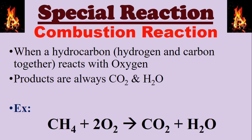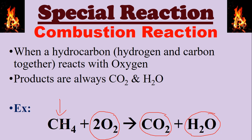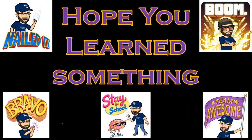One of the special reactions is called a combustion reaction. The definition is when a hydrocarbon — hydrogen and carbon together — reacts with oxygen. The products are always CO2 and H2O. The best way to identify it: on the left side you must have O2; on the right side you must have CO2 and H2O; and the other reactant must contain carbon and hydrogen together, like CH3. As long as it's CH together, you have a hydrocarbon and it's a combustion reaction. I really hope you learned something today. Like always, I'm Mr. Norris and I'm out for this video.